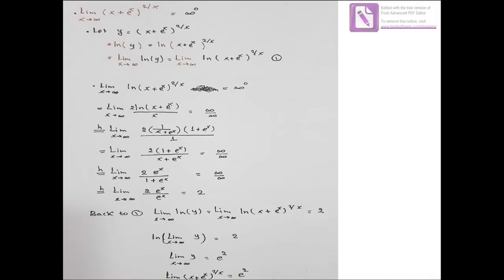We have another example: the limit of (x + e^x)^(2/x) when x approaches infinity. This is of the form ∞^0, which is another indeterminate form. So we assume y = (x + e^x)^(2/x), add ln to both sides, then add the limit when x approaches infinity.